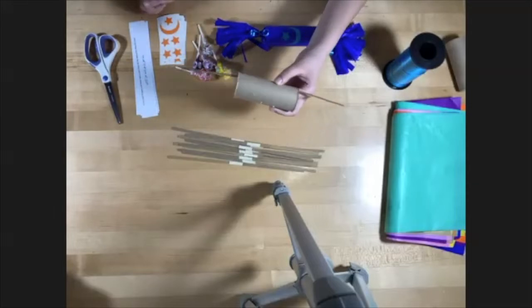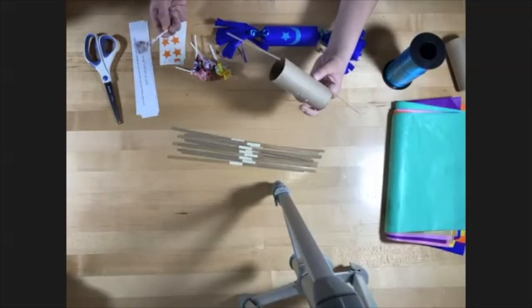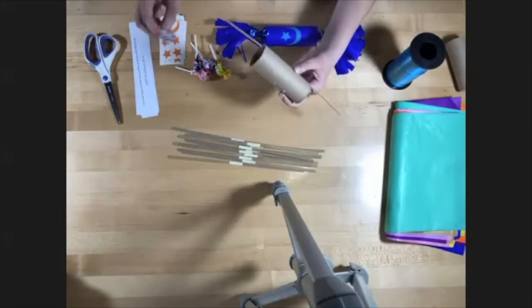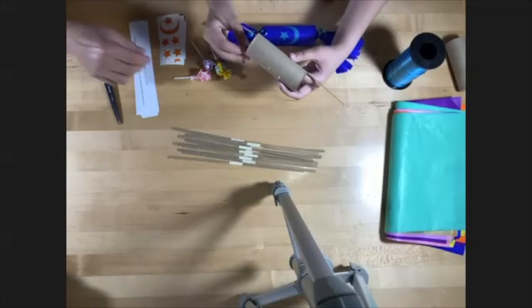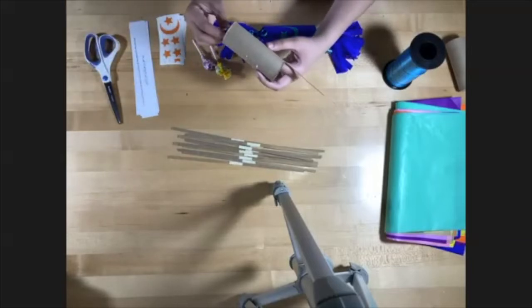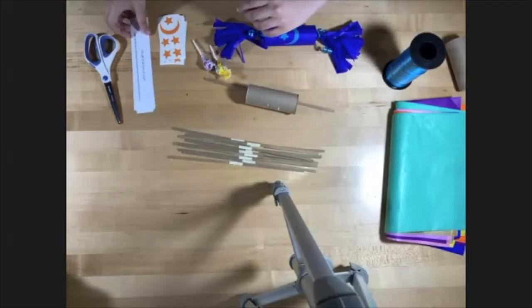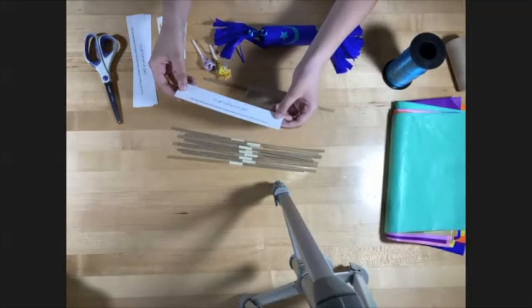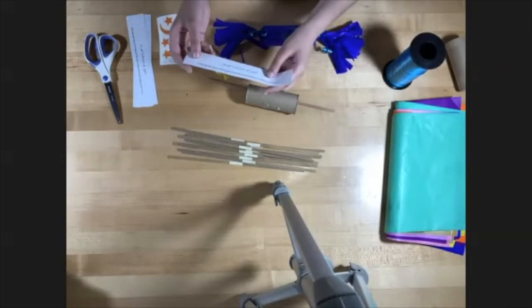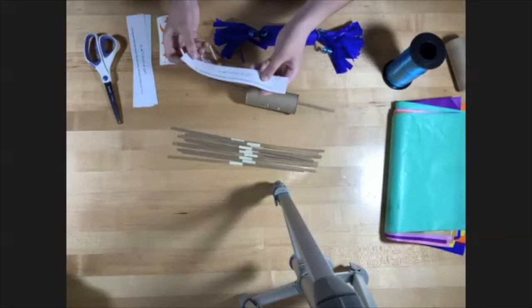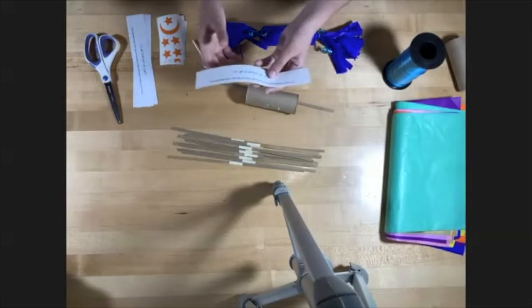All right, very cool. So the first thing we're going to do is we're going to take one of these poppers and we're going to slide it in to the roll. Make sure that the popper is centered and in the middle and that it's sticking out on both sides. That's very important that it sticks out.